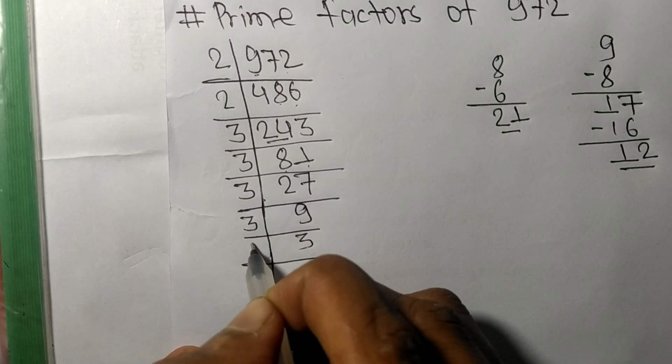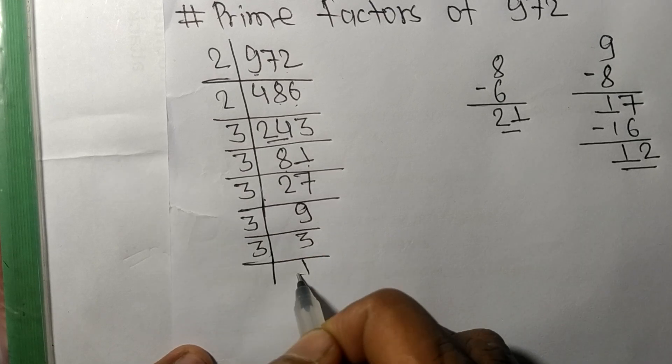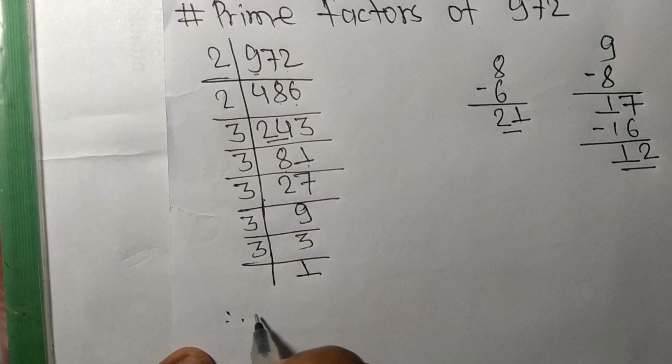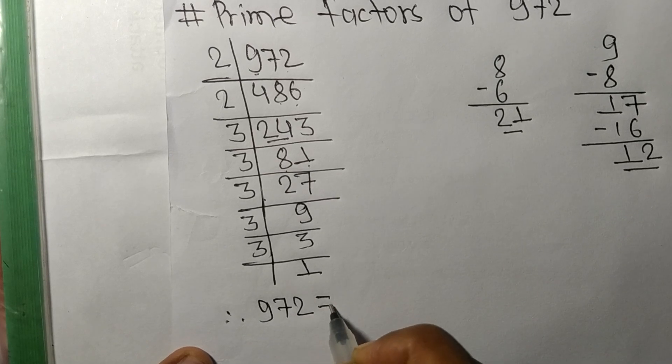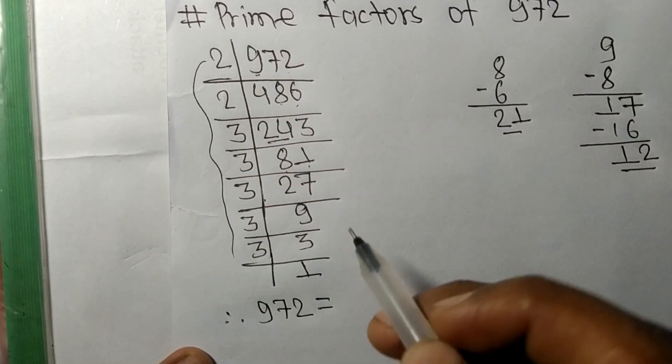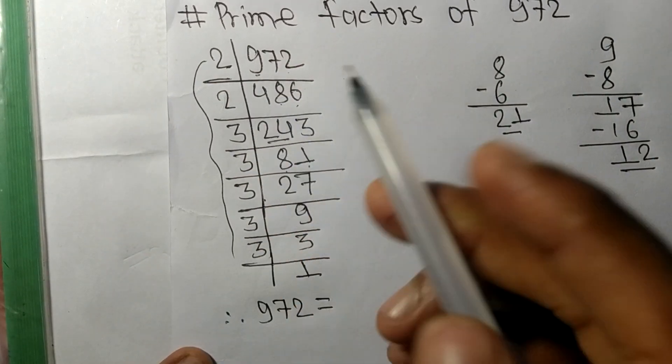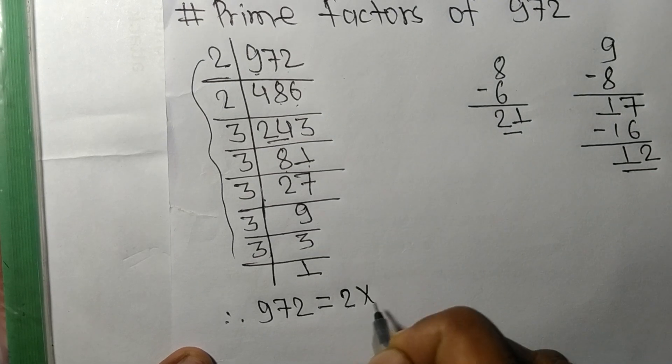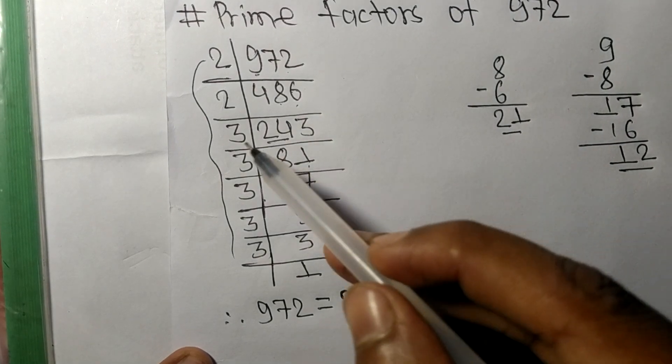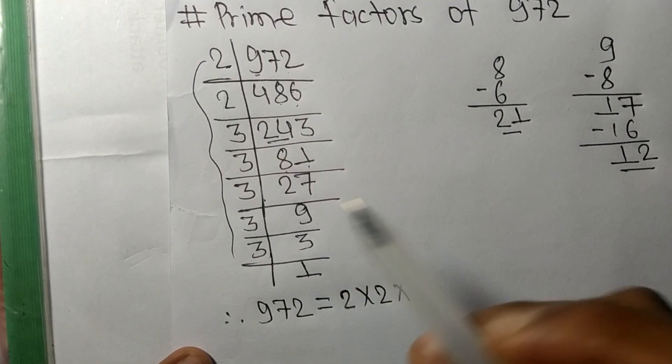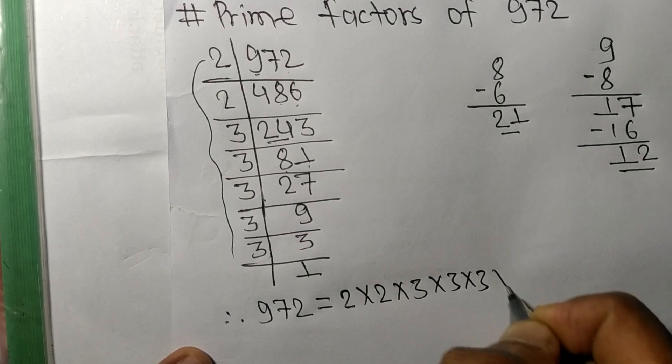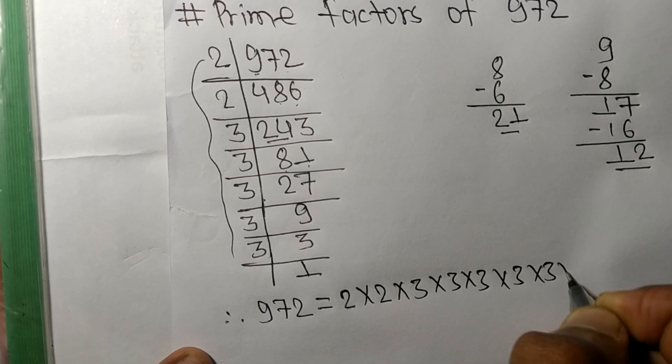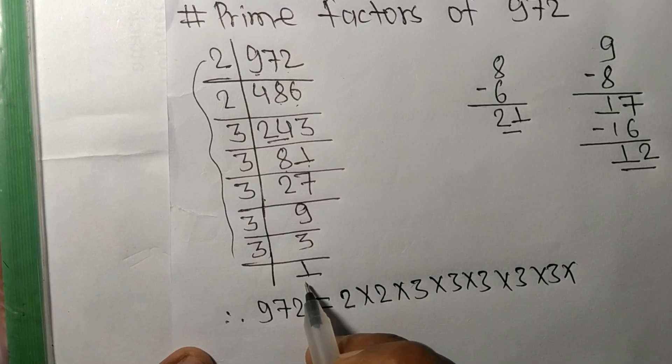Therefore 972 is equal to, from this side it is 2 times 2, and then five times 3. So 2 to the power 2 and 3 to the power 5.